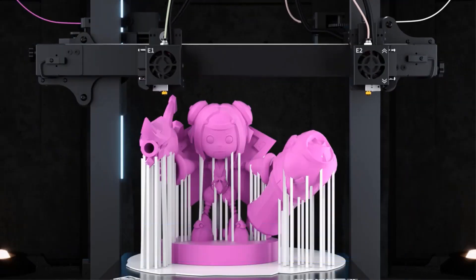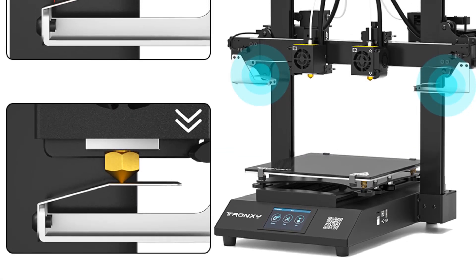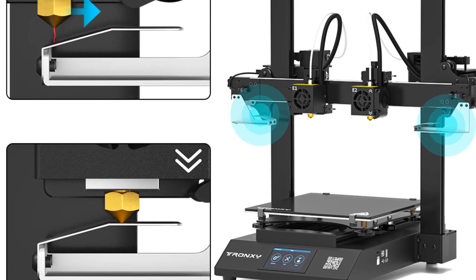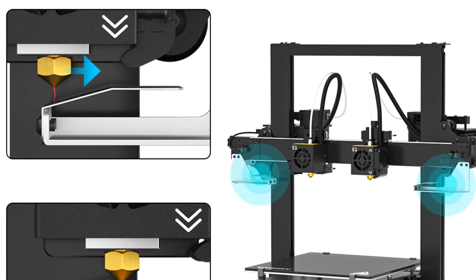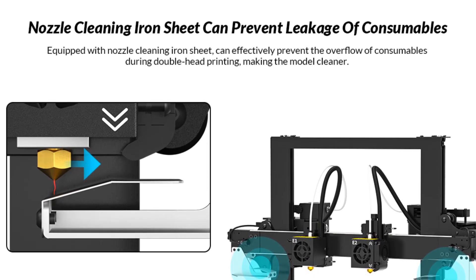Featuring a printing size of 255 by 255 by 260 mm, the Gemini XS offers a decent build volume for creating medium-sized objects or multiple smaller prints in a single job. This size allows users to bring their ideas to life with a good level of detail and accuracy.